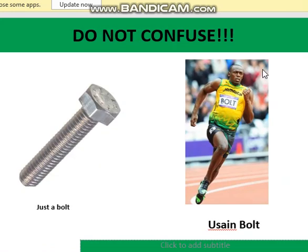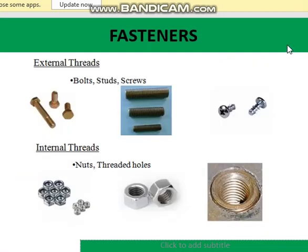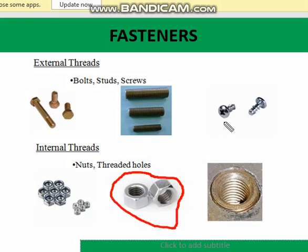The idea is not to confuse the concept of what a bolt means — fastener. We have the classification of fasteners. External threads can be of three types: bolts, studs, and screws. Remember that both studs and screws are external threads. Internal threads are the nuts and threaded holes. On the picture you can see what nuts are — these kinds of things are called nuts.